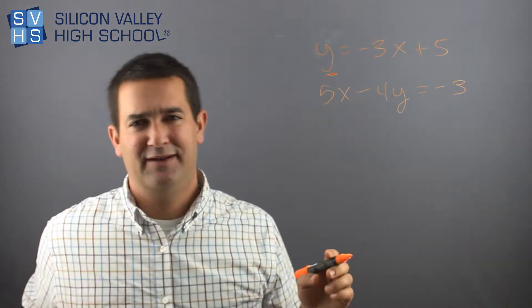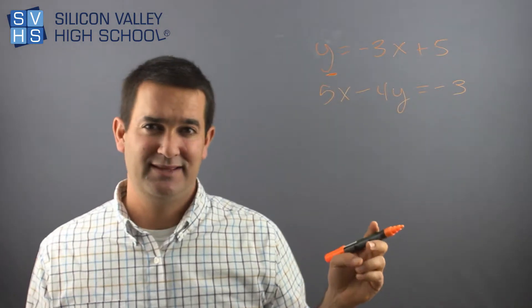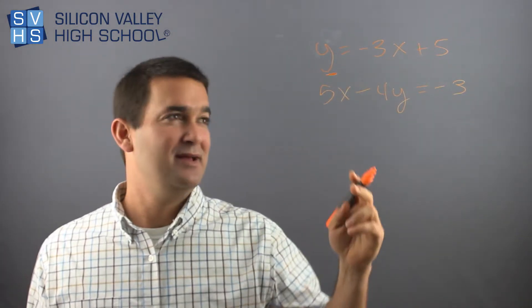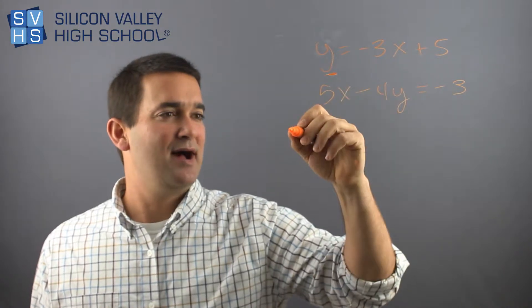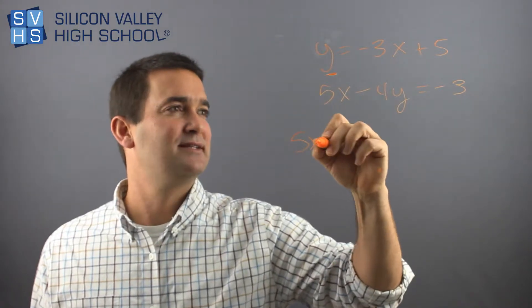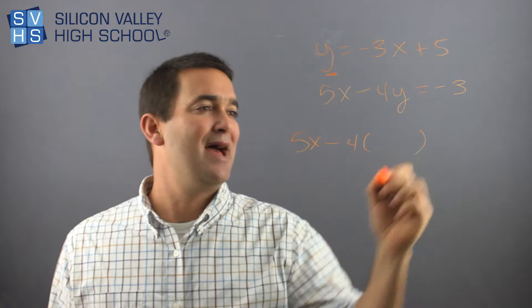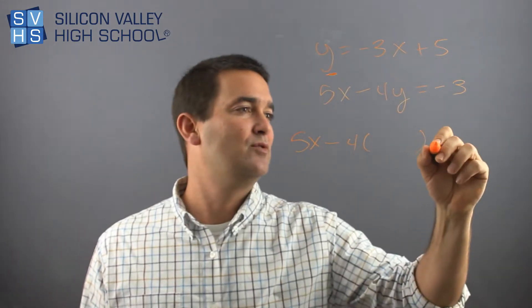If the teacher says you have to use a certain method, you can maybe work backwards, but usually it's pretty obvious. So this one, let's do it. If that's y, look, I'm going to take this guy, 5x minus 4, leave an empty space for my y equals negative 3.